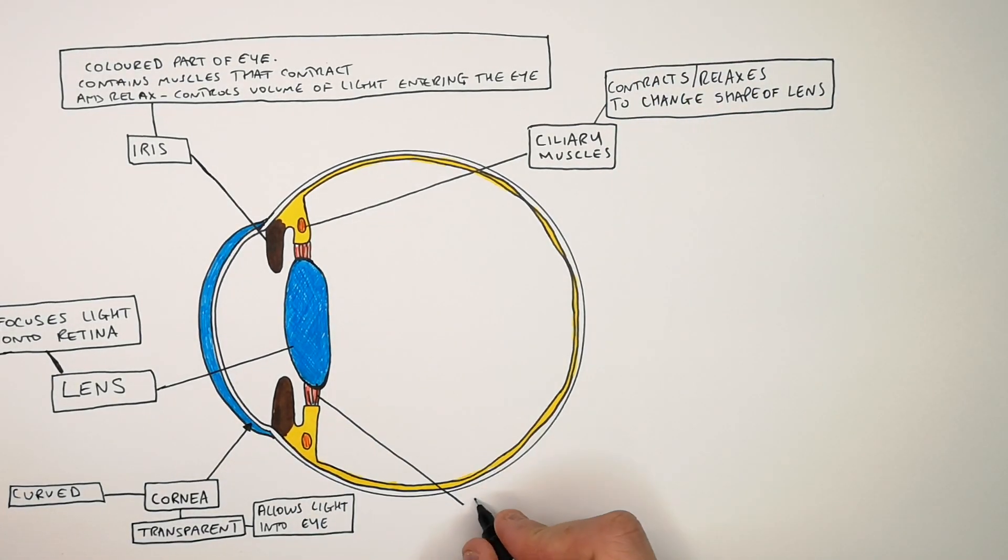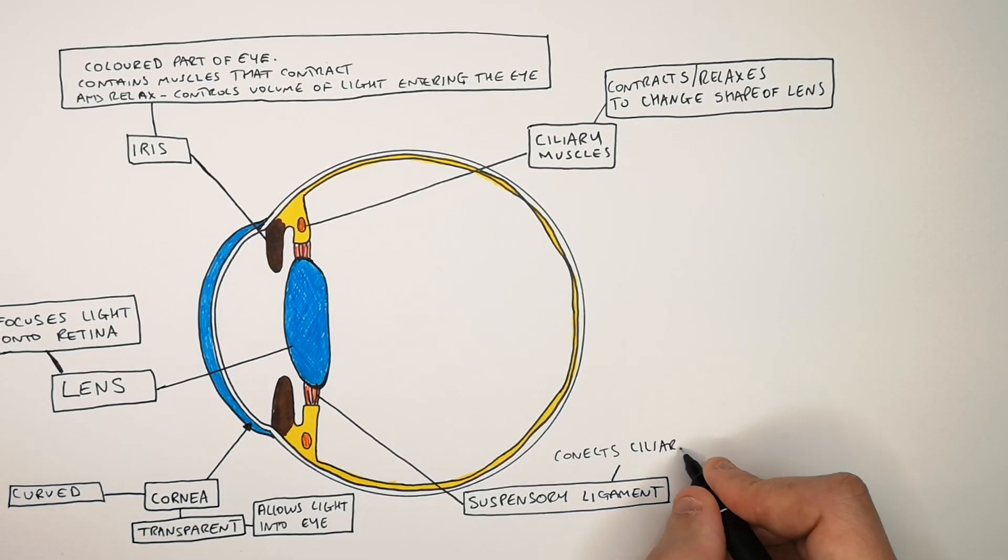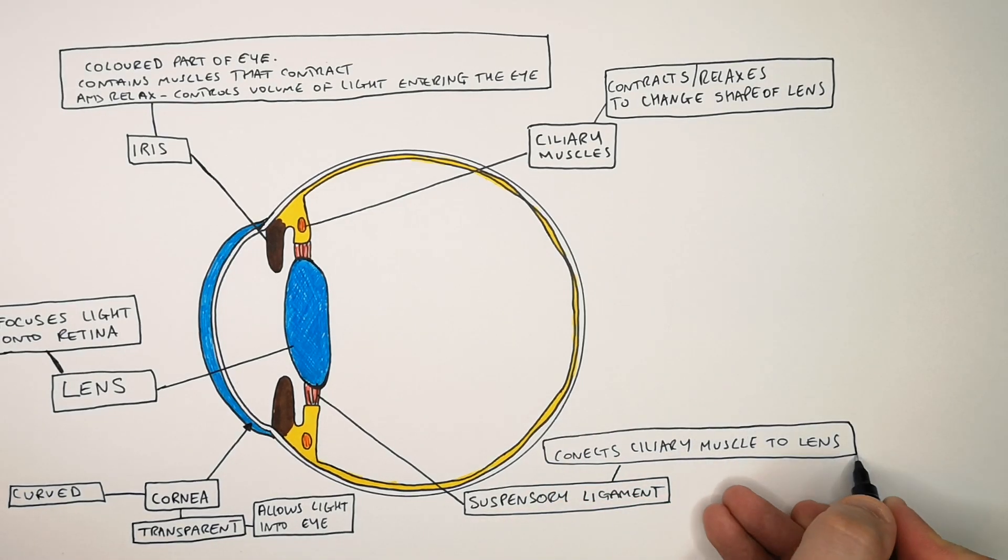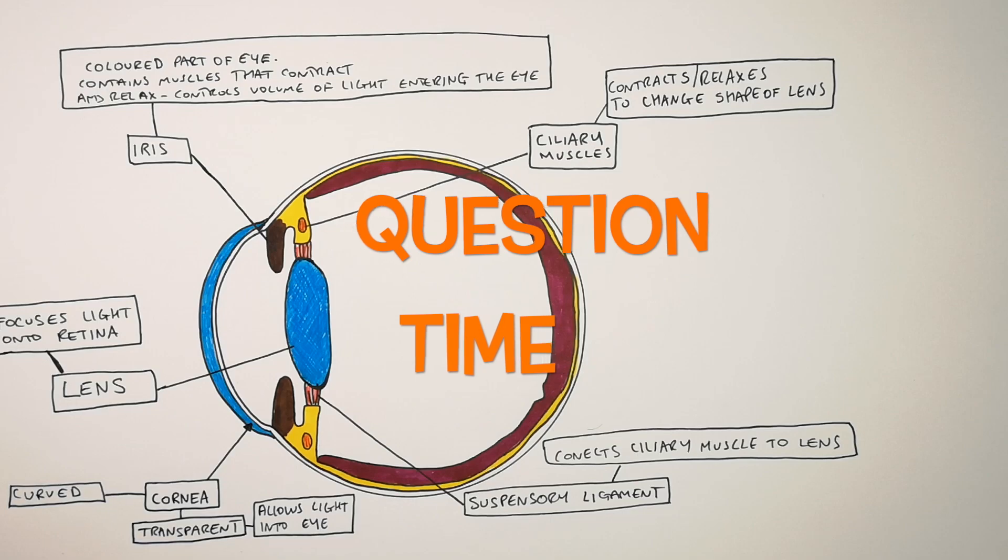And these are the suspensory ligaments. The suspensory ligaments connect the ciliary muscles to the lens and help control whether or not the lens changes shape. It's question time. Attempt these questions to check your understanding.